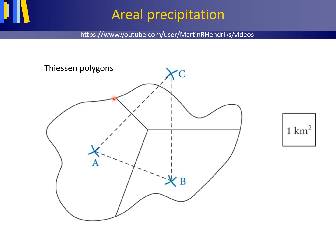This method is more accurate than calculating the arithmetic mean, but it's rather inflexible, since missing data from any one of the gauges calls for a new network to be constructed. Also, the Thiessen polygons do not cope well with orographic effects in precipitation.